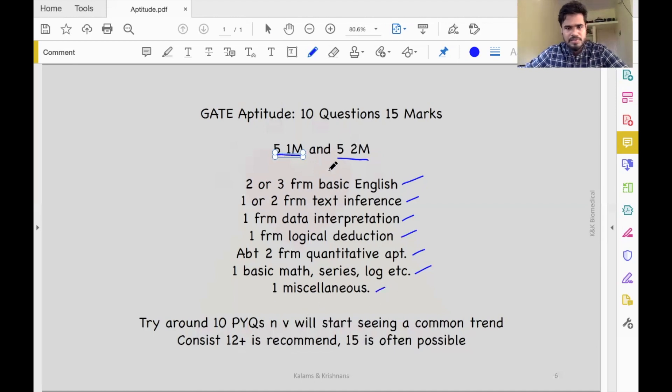So the simple thing is, there are 10 questions. If you look at about 10 previous year question papers, you will start seeing a trend. Once you see the trend, identify where you are good, reinforce that, and see where you are weak and start working on those aspects.